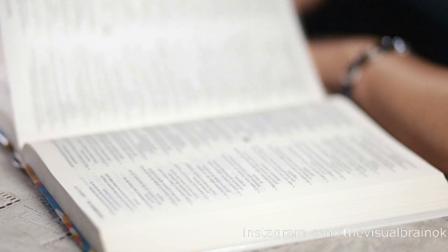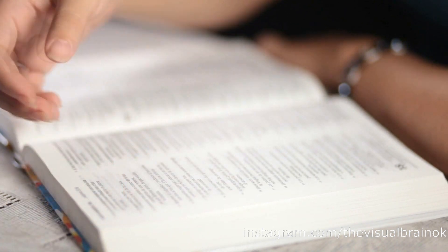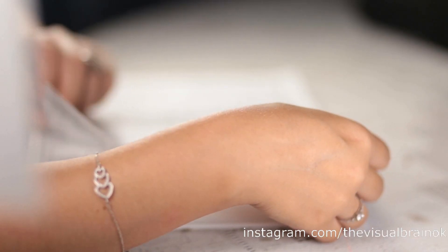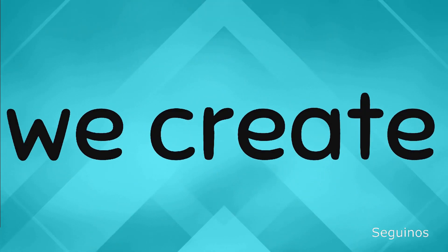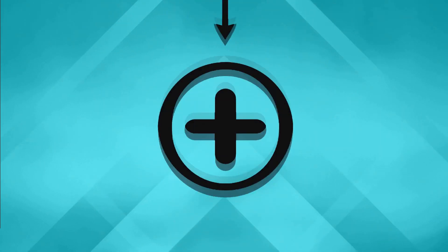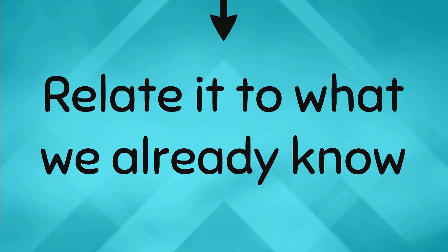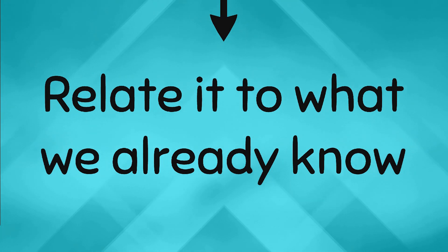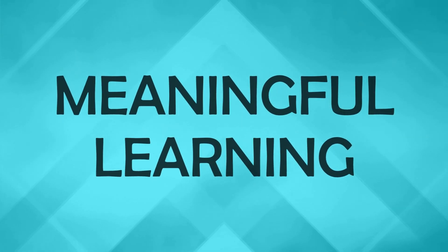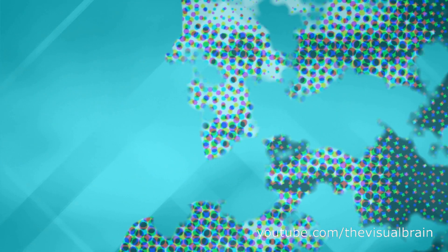Ausubel considered that learning new knowledge is based on what is already known. This means that in order to learn, we create a kind of network of concepts in which we add new information and relate that information to what we already know. This is what we know as meaningful learning. But before delving into it, let's look at other important concepts in Ausubel's theory.